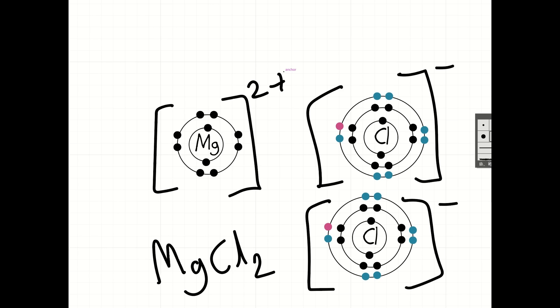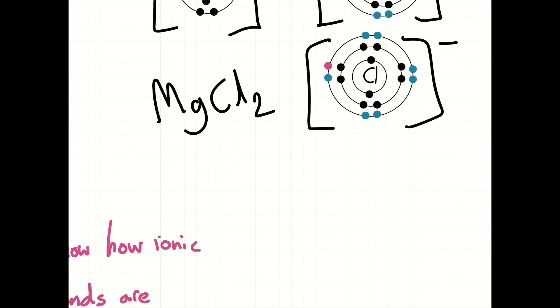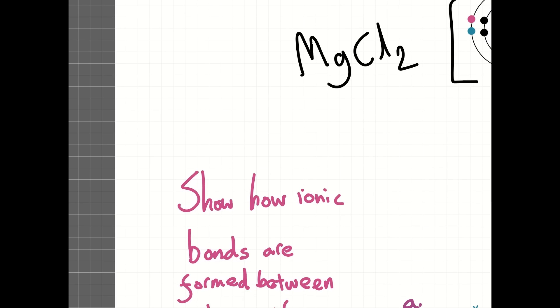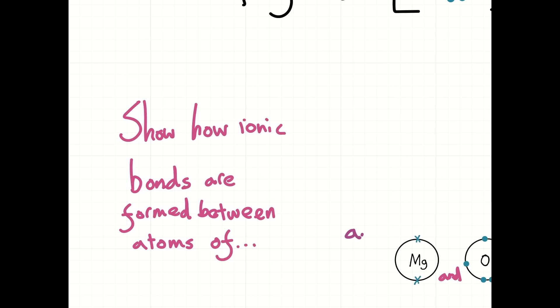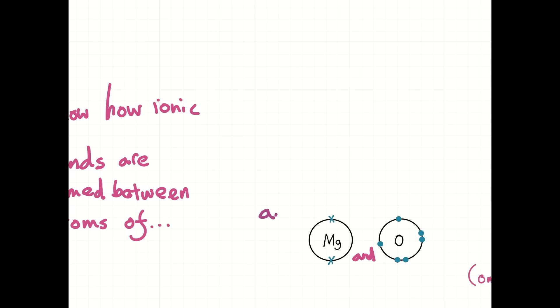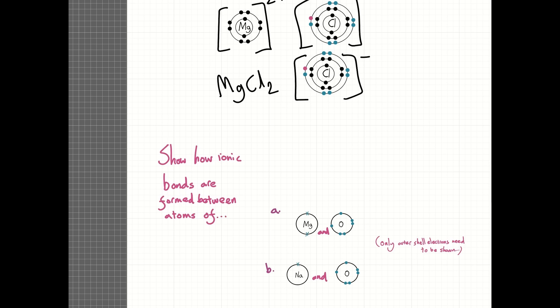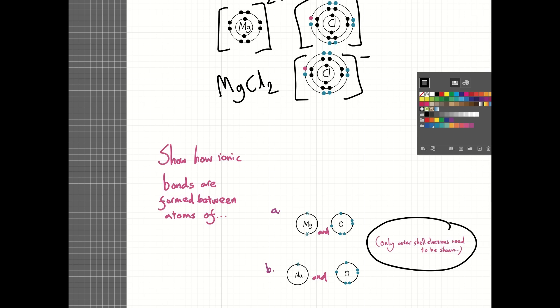Right. Let's do some exercises to see how much you've understood. So, can you show how ionic bonds are formed between atoms of A, magnesium and oxygen, and B, sodium and oxygen. For this, you only need to show the outer shell electrons. So, pause the video, think about it, write your answer down if you can, and check back.